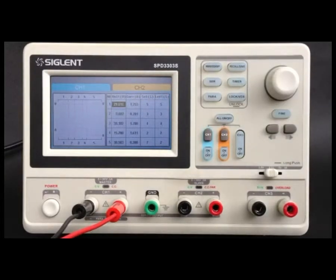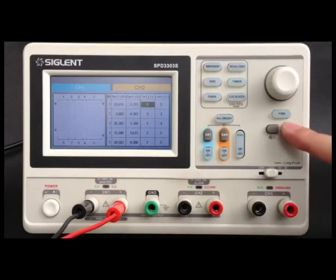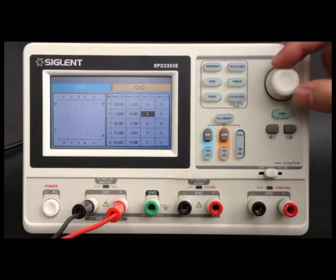Through the left and right direction keys, select the data to change the current set of parameters. Rotate the knob to set the parameter value.